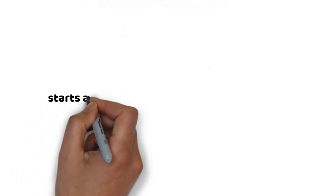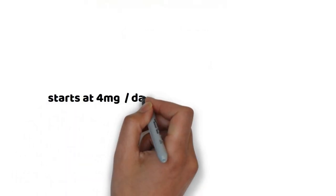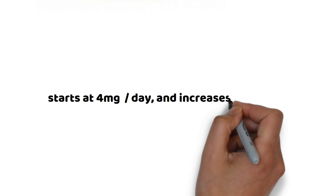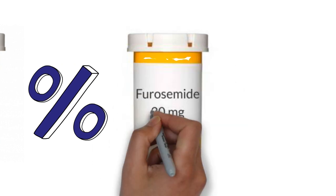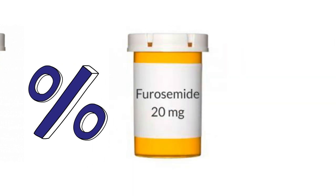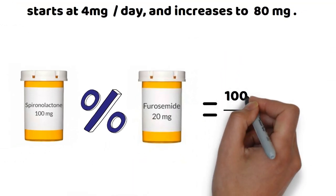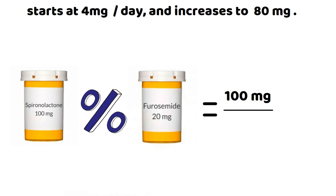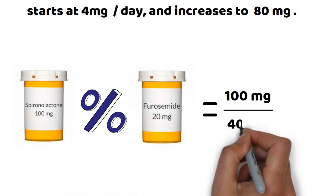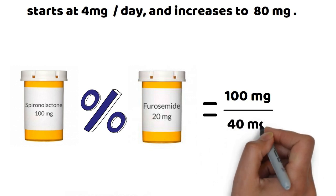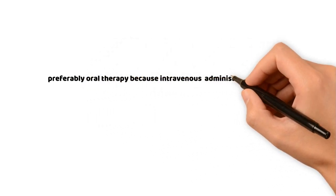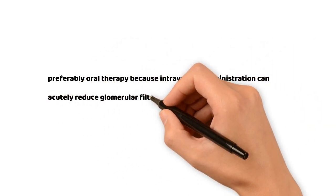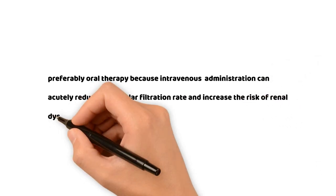Furosemide starts at 40 mg per day and increases to 80 mg. The ratio of spironolactone to furosemide dosage is best kept at 100 to 40 to maintain potassium homeostasis — that is, 100 mg spironolactone and 40 mg furosemide. Oral therapy is preferred, because intravenous administration can acutely reduce the glomerular filtration rate and increase the risk of renal dysfunction.